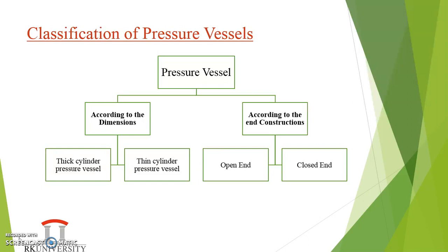Classification by end constructions refers to how you close the ends of the pressure vessel. Pressure vessels are made by rolling sheet metal and joining through riveting or welding operations. The two ends of the vessel can either be open or closed, and this forms the basis of the end construction classification.